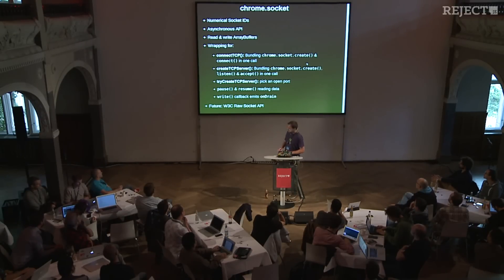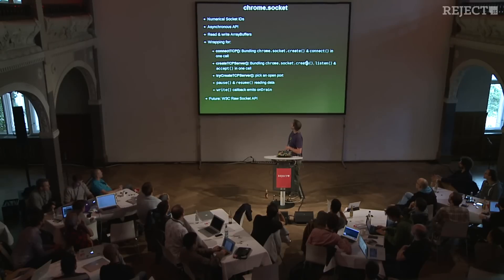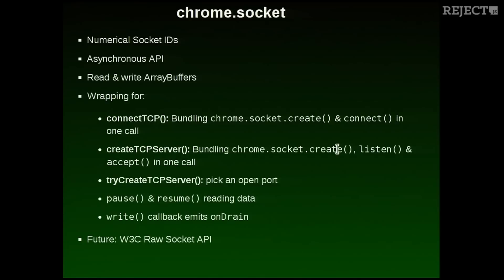Chrome Socket implements this. There's no nice wrapping, just methods and numerical socket IDs, which remind me of the POSIX file descriptors. But the API is asynchronous so it does not block, which is nice. And you always deal with array buffers — the foundation for typed arrays — which is binary safe. So I created my own wrapping, which has a few helper methods for connecting out with a client socket, for creating a server socket that handles incoming connections with a callback. And because I don't want end-users on a desktop to configure port numbers, I've got some guessing and retrying logic there too.